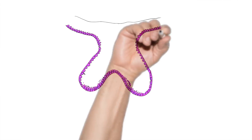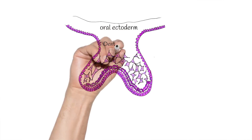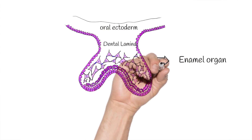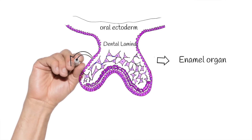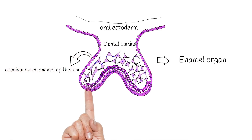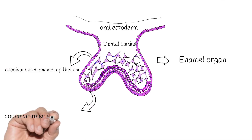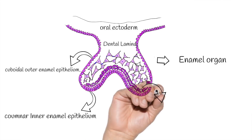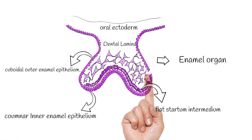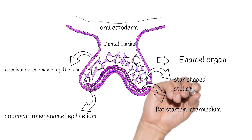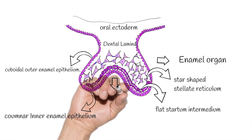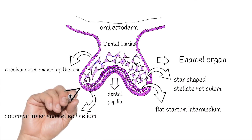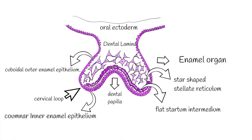To understand amelogenesis, let us go back to the early bell stage of odontogenesis where the enamel organ roughly resembles a bell-shaped structure. In that structure we can see the columnar inner enamel epithelial cells, cuboidal outer enamel epithelial cells, flat-layered cells called stratum intermedium, and star-shaped stellate reticulum cells. The underlying ectomesenchymal condensation representing the dental papilla has increased its condensation, as has the dental sac surrounding the enamel organ.